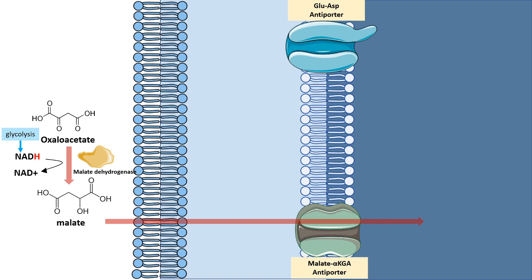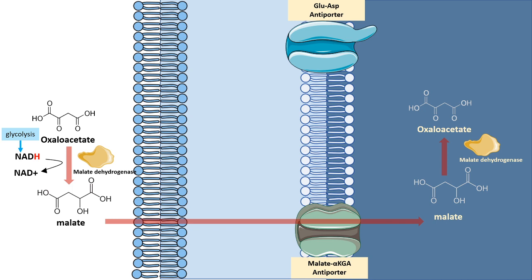Malate would be transported into the mitochondrial matrix via the malate-alpha-ketoglutarate antiporter. Inside the mitochondrial matrix, malate is converted back to oxaloacetate with the help of malate dehydrogenase — this enzyme works in a bidirectional fashion, so malate and oxaloacetate are interchangeable. When it converts malate to oxaloacetate, it also regenerates NADH, which can then be used in the electron transport chain.